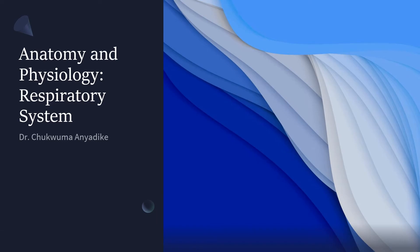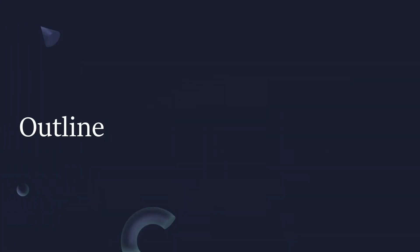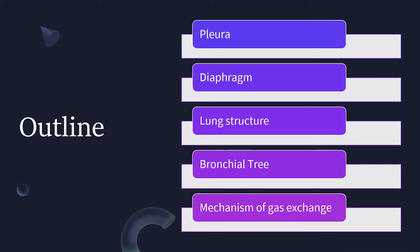This lecture is Anatomy and Physiology: Respiratory System. We have an outline of this lecture. We will talk about the pleura, the diaphragm, lung structure, bronchial tree, and the mechanism of gas exchange.